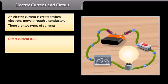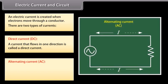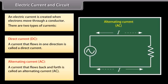Direct current, or DC, is a current that flows in one direction. For example, a battery produces a direct current. Alternating current, or AC, is a current that flows back and forth. The symbol of electric current is I.